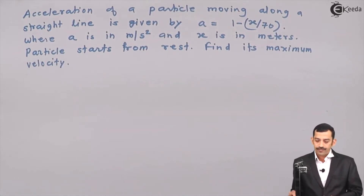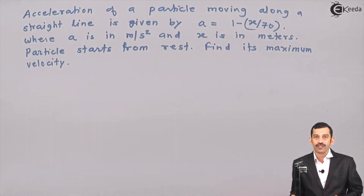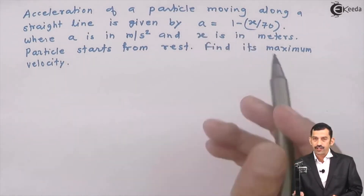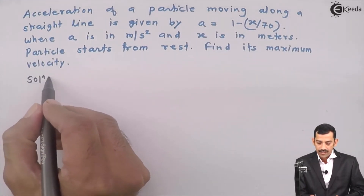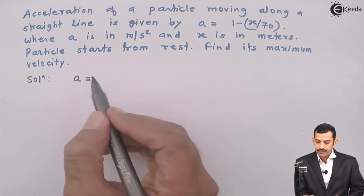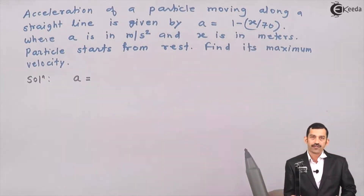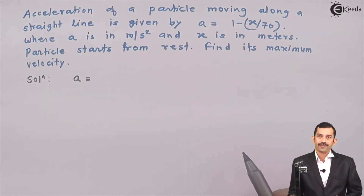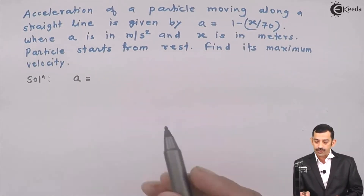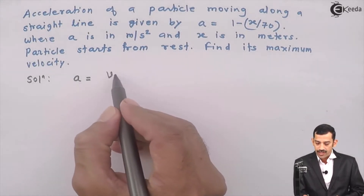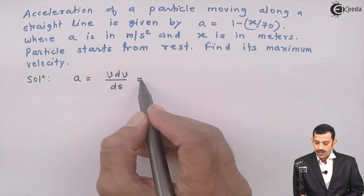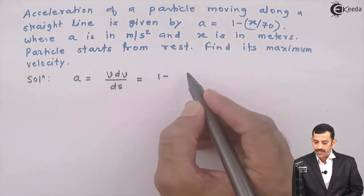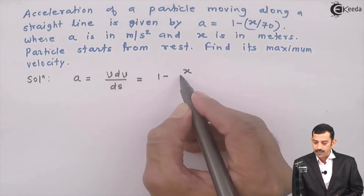To solve this problem, acceleration is given as a function of x — a function of position. Therefore, we will substitute a in terms of x. The substitution is: a in terms of t is dv/dt, but a in terms of x is v·dv/ds, which equals the given acceleration equation: 1 - x/70.